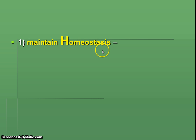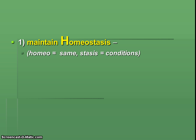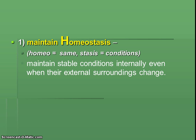Homeostasis doesn't seem familiar probably to you, so what's a way you could really make sure it stands out? You could box it, or maybe highlight it — this is a brand new word for pretty much everybody and it really needs to stand out in your notes. Let's break down the word. Please write down both parts. The first half is homeo, meaning same. The second half is stasis, meaning conditions. The full definition is: maintaining stable conditions internally when external surroundings change.